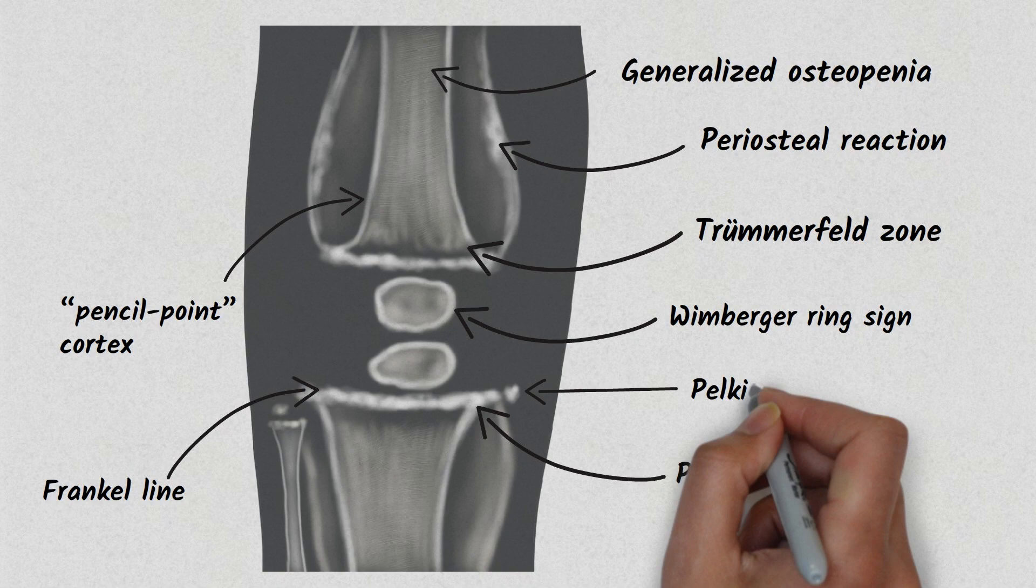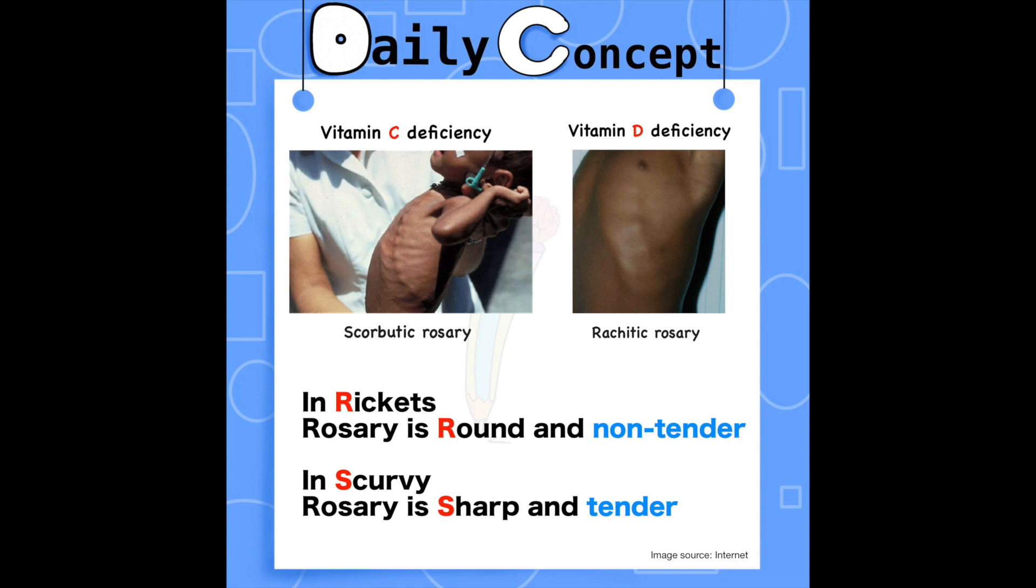In chest radiograph, you can see expansion of the costochondral junction which is called scorbutic rosary. It is similar to the rachitic rosary appearance as seen in rickets.